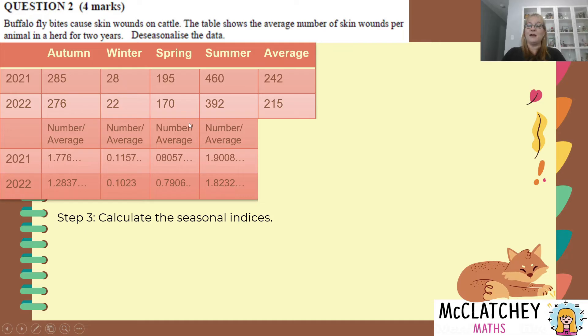Step three, we now need to calculate the seasonal indices. So for example, for autumn, what we're doing is we're basically taking these two numbers and finding the average of those two numbers. We add these two together, divide by two. We're going to repeat for winter, spring and summer as well.